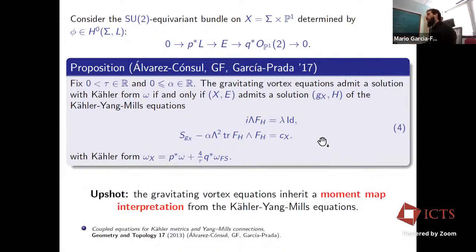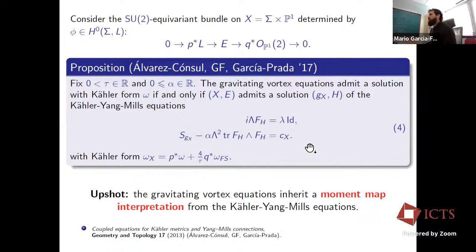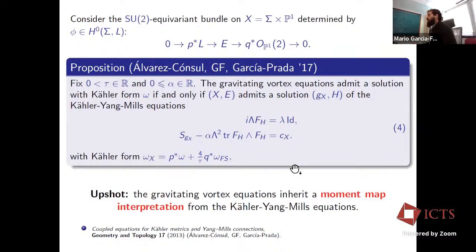The important point is that the way we arrived at these equations is purely mathematical, via a moment map construction in infinite dimensions similar to the Atiyah–Bott–Donaldson construction for the Hermitian–Yang–Mills equations. The upshot is that the gravitating vortex equations automatically have a moment map interpretation, which I will use systematically.